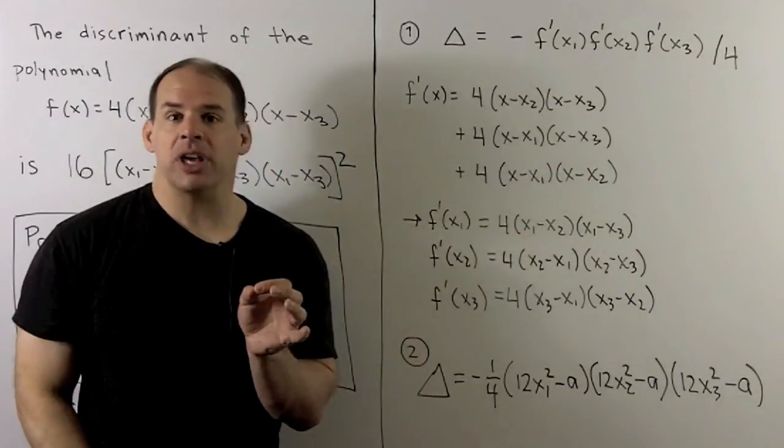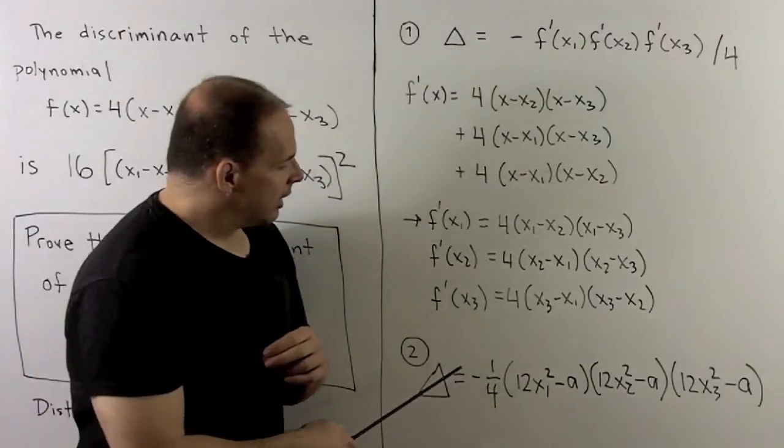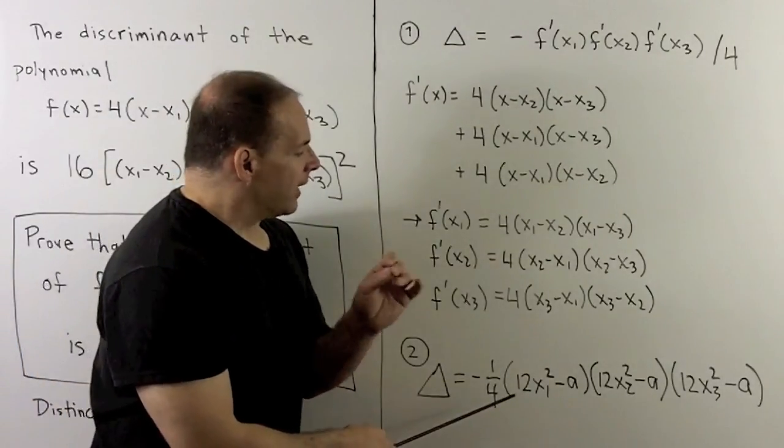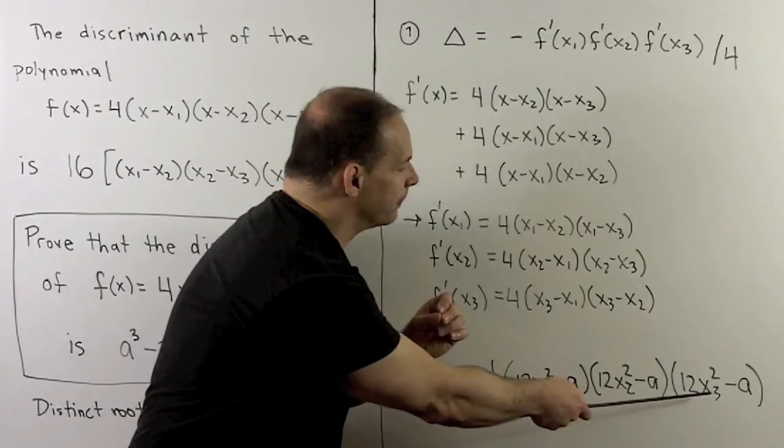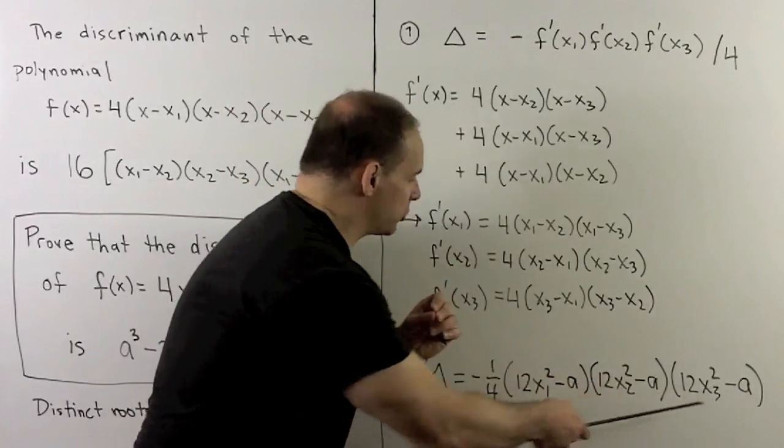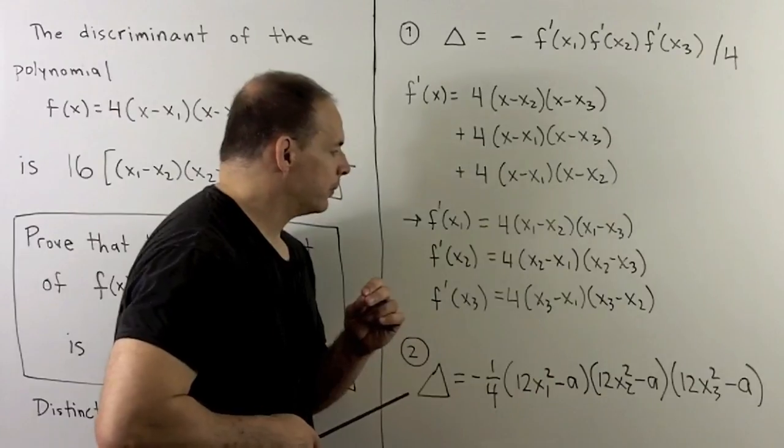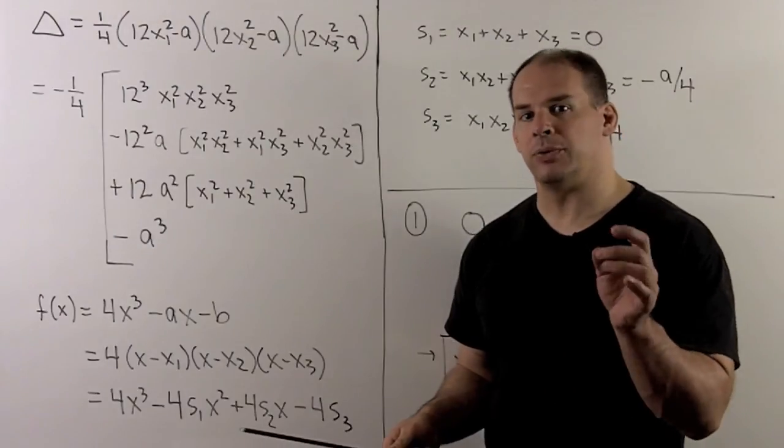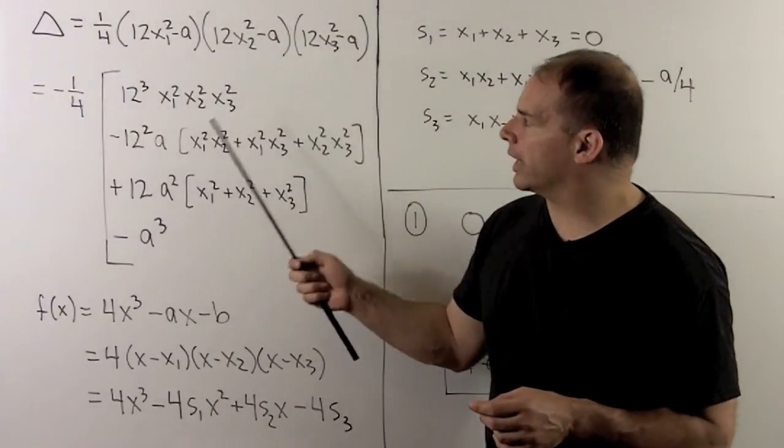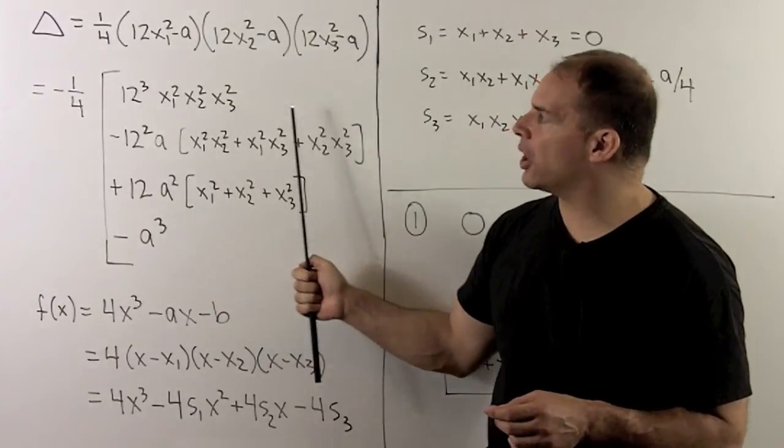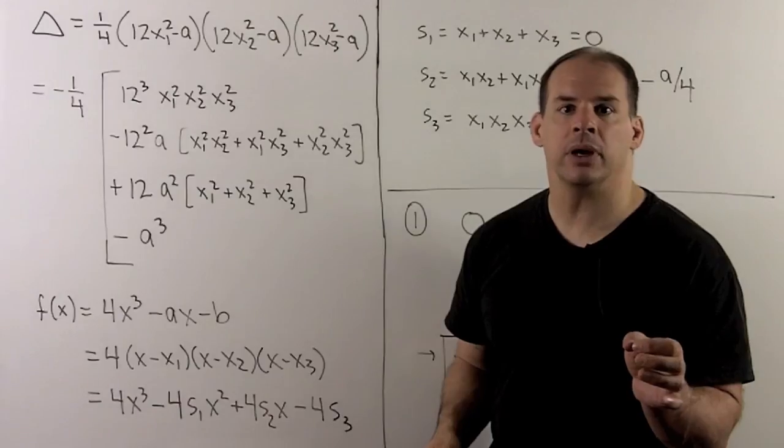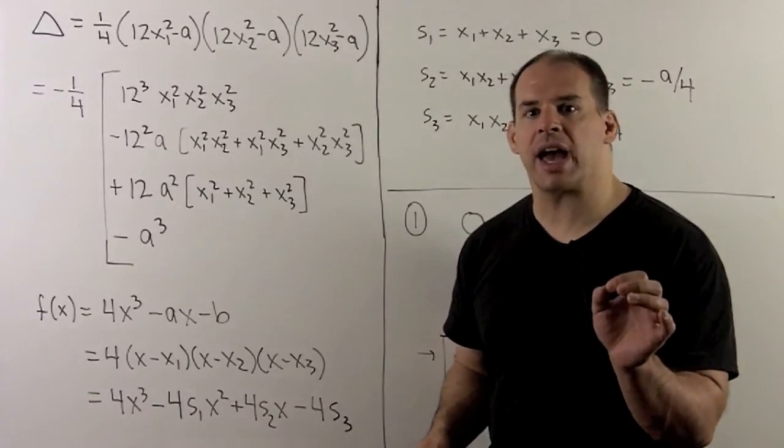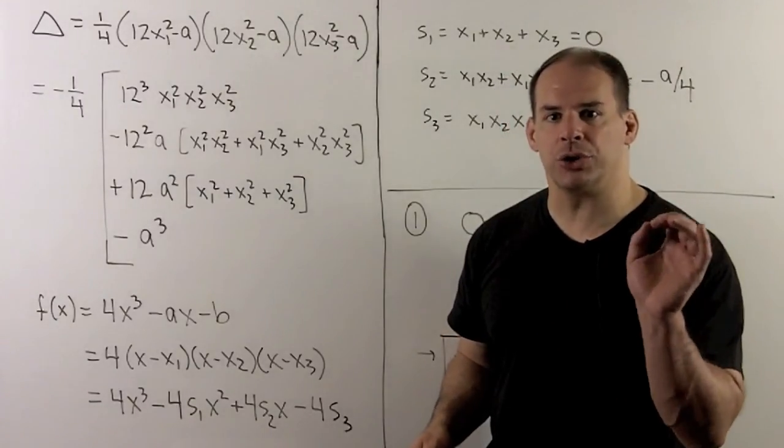In our special case, we get, with a minus one-fourth, then 12x₁² - a, then for x₂ and x₃. We want to pull apart this expression here. If we expand, we'll get coefficients that are symmetric functions of the squares of x₁, x₂, and x₃. We'll be able to substitute those out if we go to the original cubic.